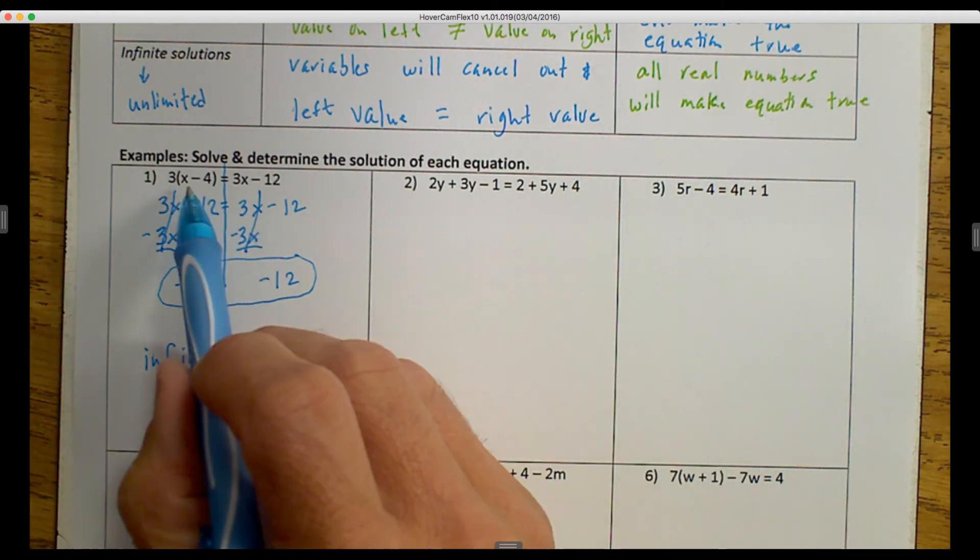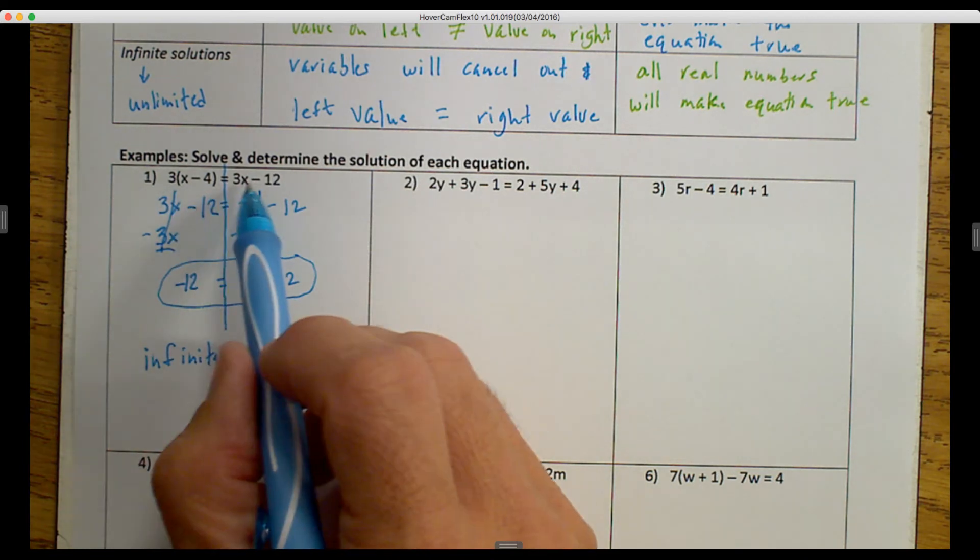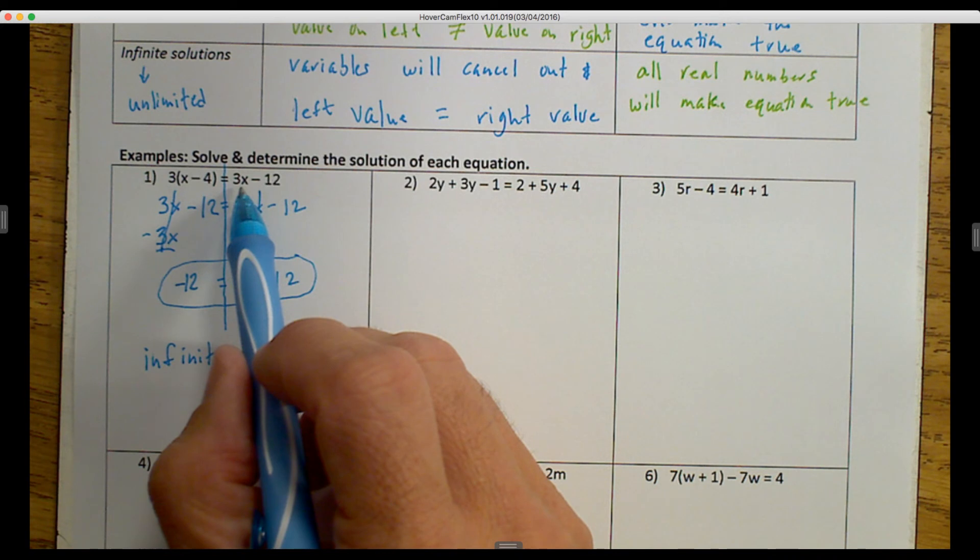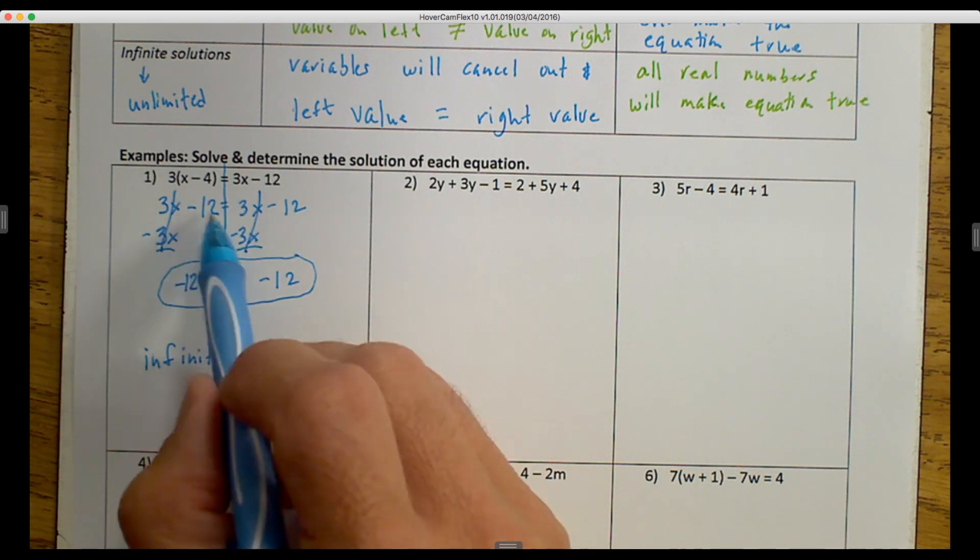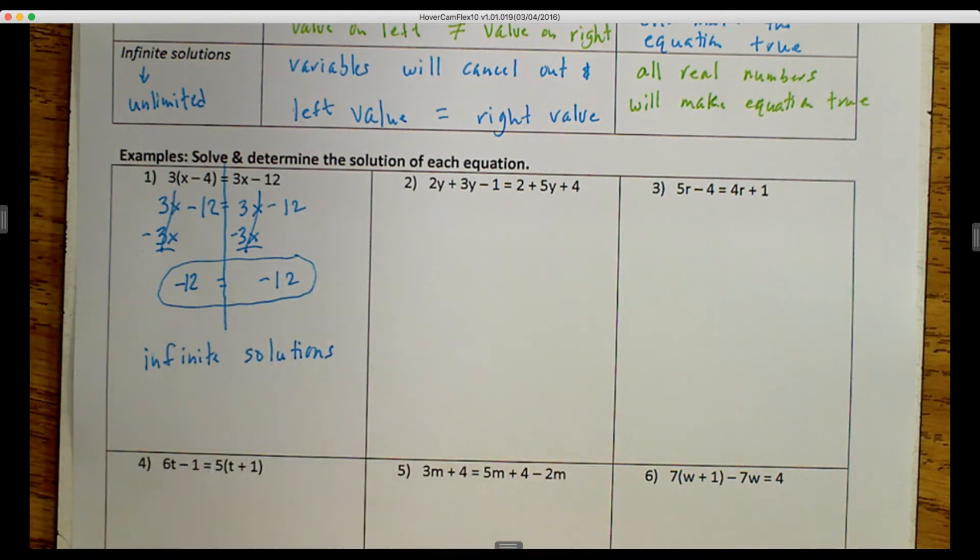Now, what that means is, whatever number I would have put in for x, I would put it in here, and it would be a true statement. So 3x minus 12, I could put any number in there, and it's always going to equal itself. Let's move on to the second example.